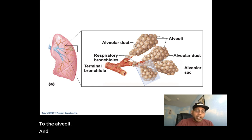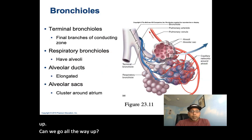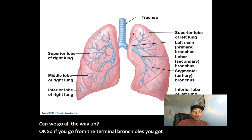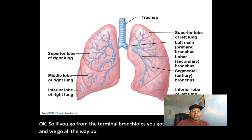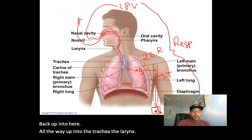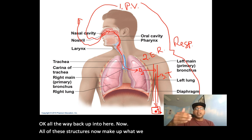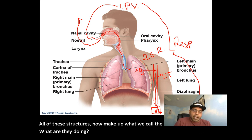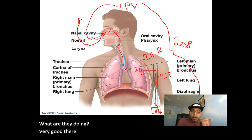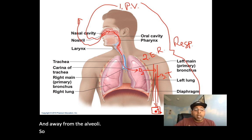From the terminal bronchioles, going all the way back up through the bronchioles, all the way up into the trachea and larynx — all of those structures make up what we call the conducting zone. What are they doing? They're conducting this air through to the alveoli and away from the alveoli. These are your conducting zone structures.